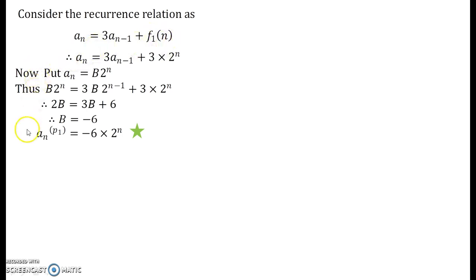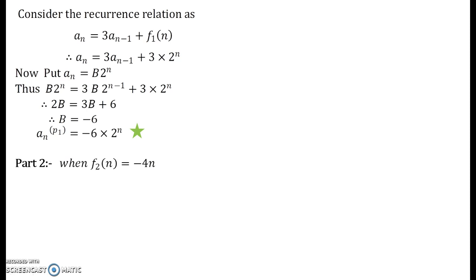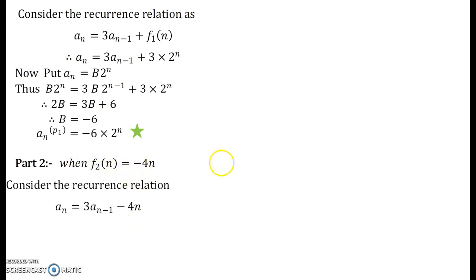Plugging in b equals minus 6, you obtain the particular solution for the first part f1: a_n^(p1) equals minus 6·2^n. Similarly, you have to find the particular solution for the second part, f2 = minus 4n. The corresponding recurrence relation is a_n equals 3·a_{n-1} minus 4n.